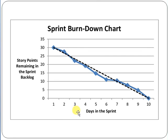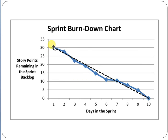Let me show you the sprint burn down chart. On the X-axis, you have the days in the sprint — for example, 10 working days. On the Y-axis, you have story points, which represent the hours for functional requirements — for example, 35 hours. The straight line on the chart shows the planned work. For instance, within 10 days, 30 story points should be completed according to the plan.